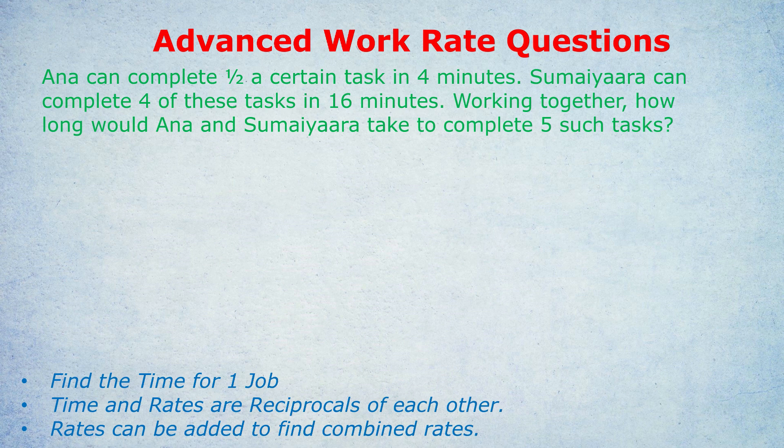What are the principles? For any work rate question, your goal is to find the time for one job and write it down clearly. They might try to trick you by giving you the time for half a job or three jobs, but we need to write down the time it takes to do one job. Next, you always need to do the reciprocal of the time to find the rate of that person. If they've given you the time for one job, we do the reciprocal to find the rate. Do that for each individual involved.